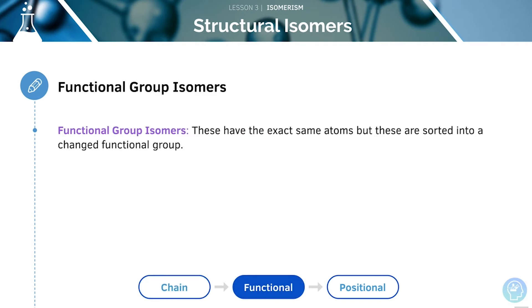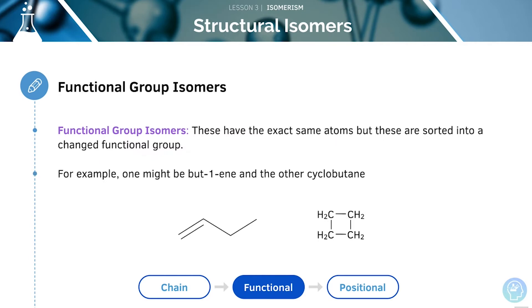Functional group isomers have the exact same atoms but are sorted into a changed functional group. For example, we might have but-1-ene and cyclobutane.